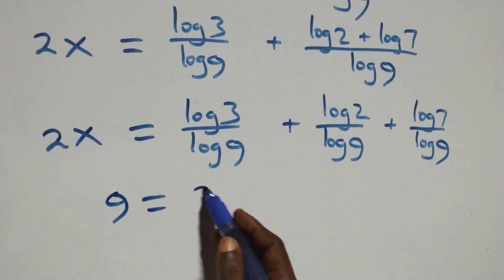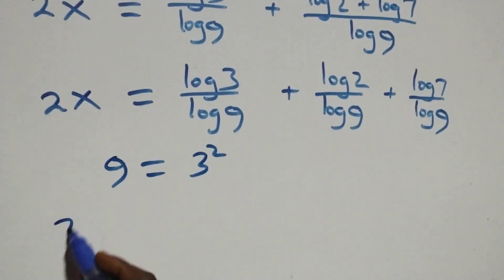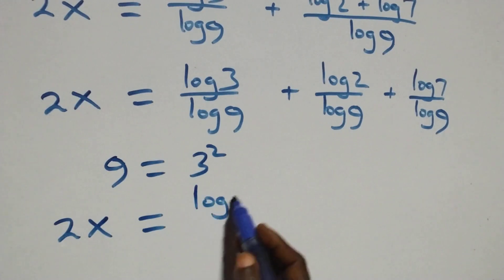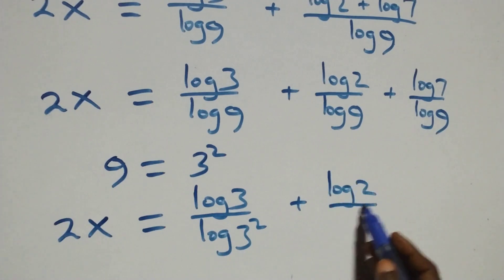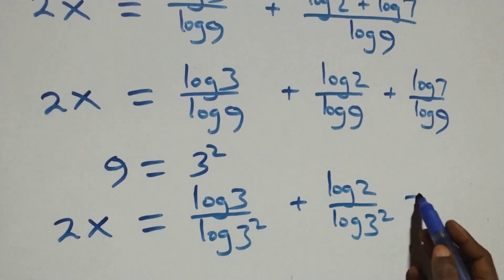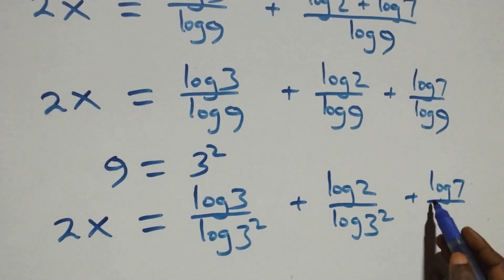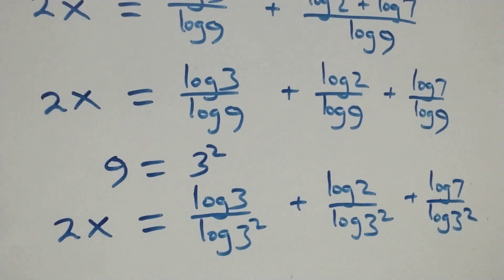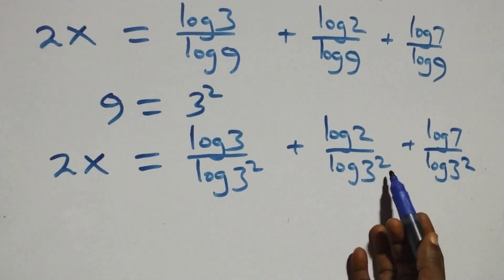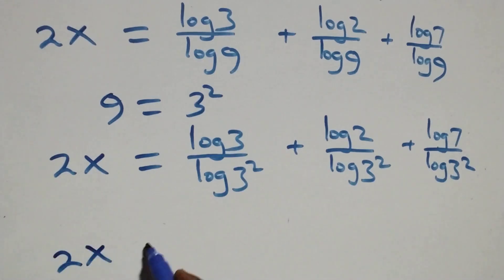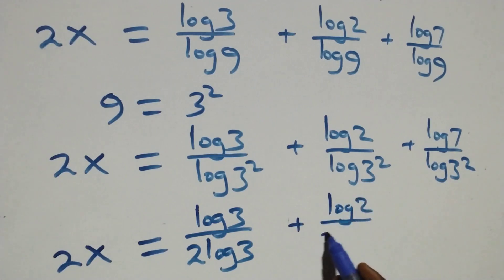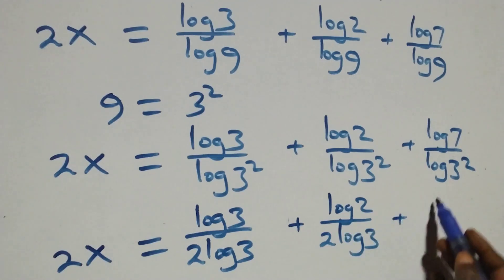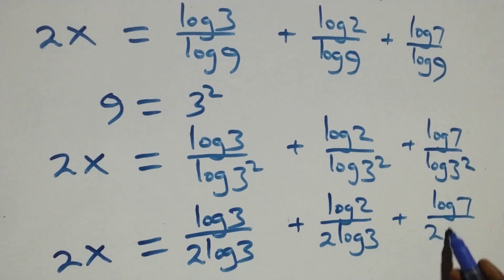Here we can write 9 as 3 times 3, that is 3 squared. Applying the power law of logarithms, log 9 becomes log 3 squared, which equals 2 log 3. What we have becomes 2x equals log 3 over 2 log 3, plus log 2 over 2 log 3, plus log 7 over 2 log 3.